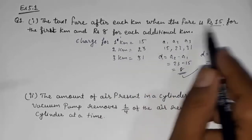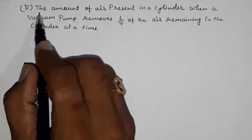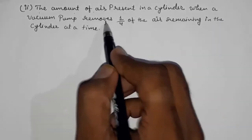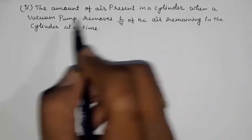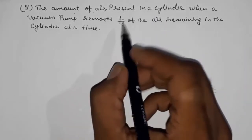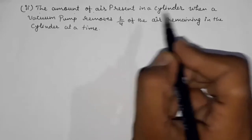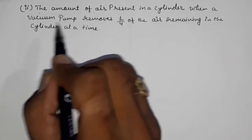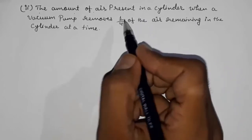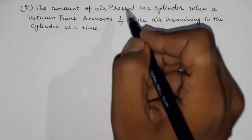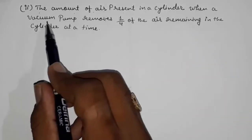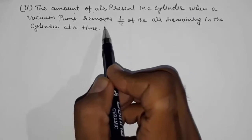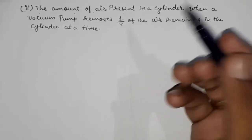For the next question: the amount of air present in a cylinder when a vacuum pump removes one fourth of the air remaining in the cylinder at a time. Many students say this is an AP, but it is not. Every time it removes one fourth of the remaining air — not the same fixed amount — so the same quantity of air is not being removed each time.